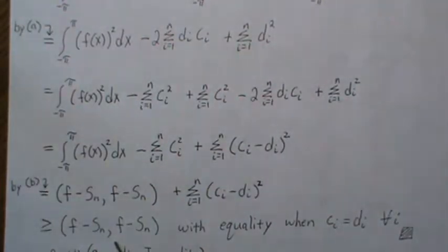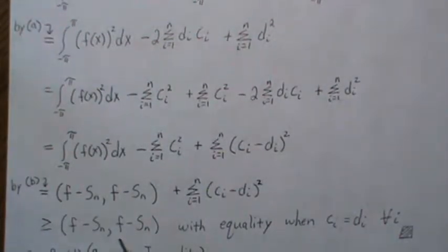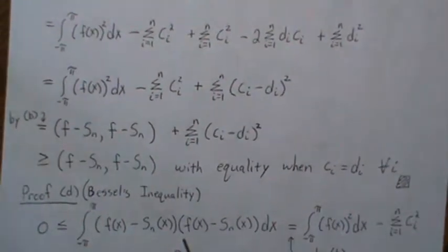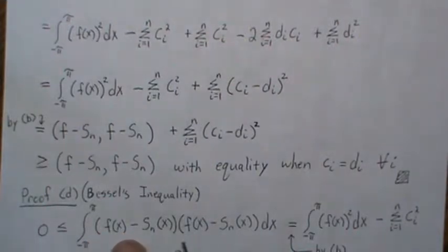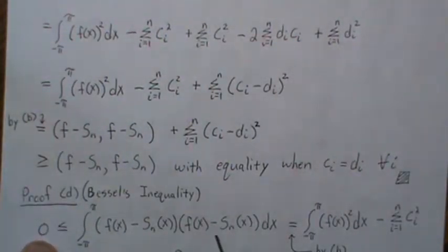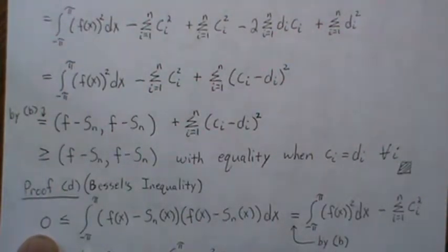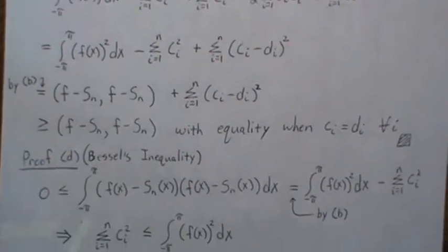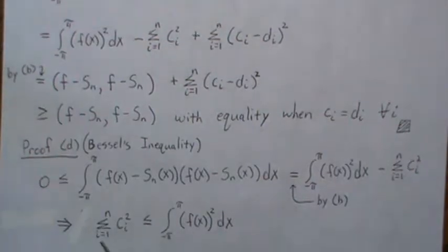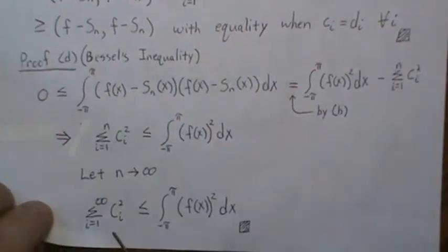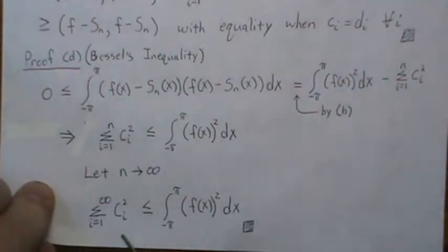Bessel's inequality: the inner product of f with itself — the squared distance of f — is always positive, giving us a key equation. By Part B, the inner product of f minus S_N with itself was derived as a formula that is greater than or equal to zero. Adding the sum of C_N squared to both sides gives this relationship. Letting N go to infinity, the sum of C_N squared over all n is less than or equal to the inner product of f with itself. That's Bessel's inequality.